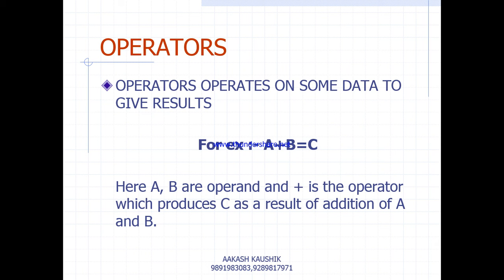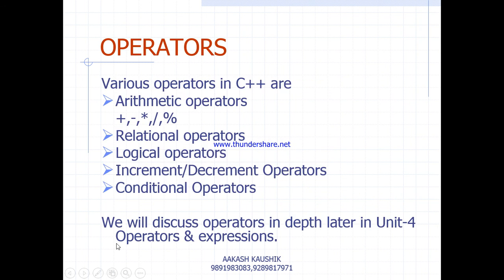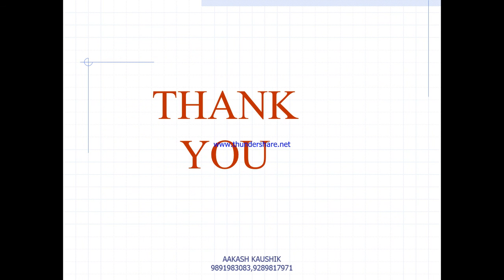The last token is operators. Operators operate on data to produce results. For example, in a + b = c, a and b are operands and plus is the operator performing addition, with the result stored in c. Various types of operators in C++ include arithmetic operators (plus, minus, multiply, divide, remainder), relational, logical, increment, conditional operators, and more. We will discuss operators in depth later in video 4 on operator expressions.